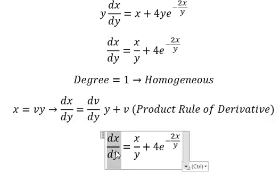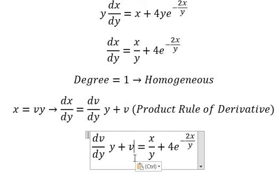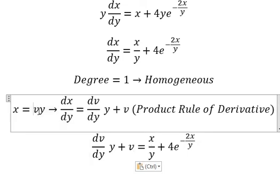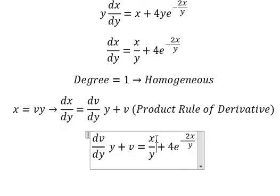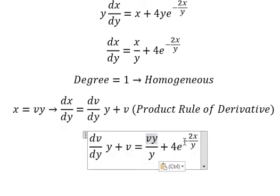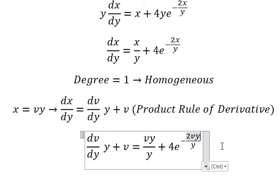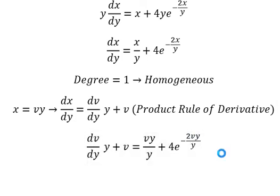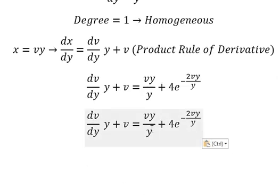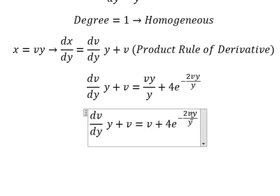So this one, we change by this one. X, we change by vy. So y divided by y, you get v. This one, we get v too.